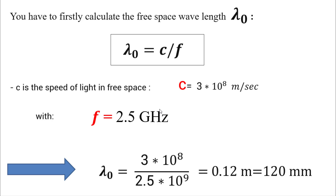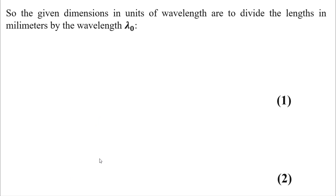So lambda zero equals 120 millimeters. We can now find our dimensions in function of lambda zero.